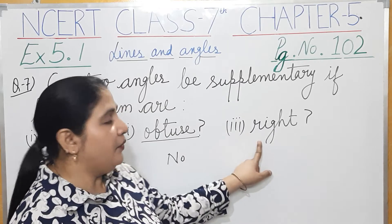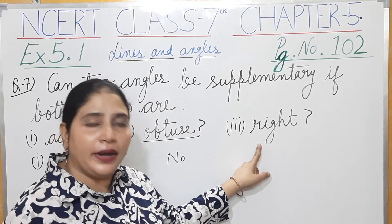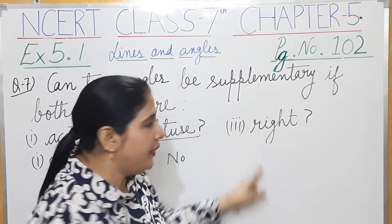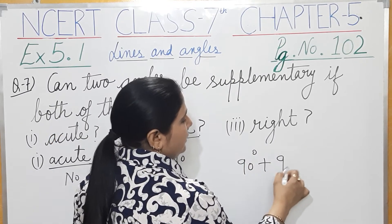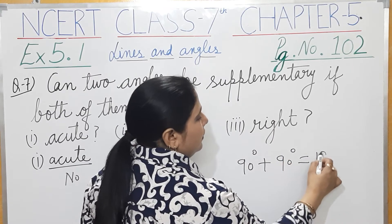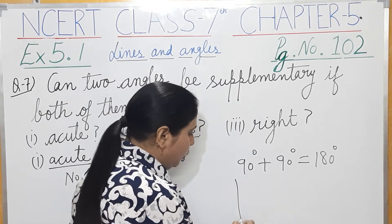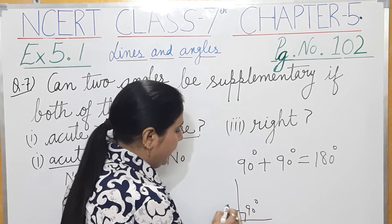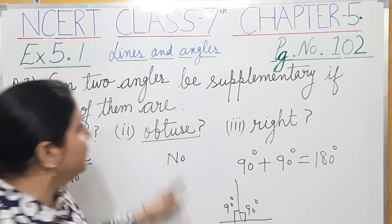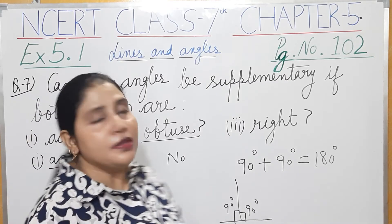Now the third one - right. Can two right angles together be supplementary? A right angle is 90 degrees. So 90 degrees plus 90 degrees - yes, they add up to 180 degrees.